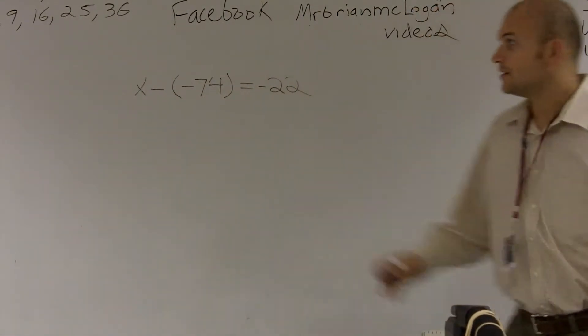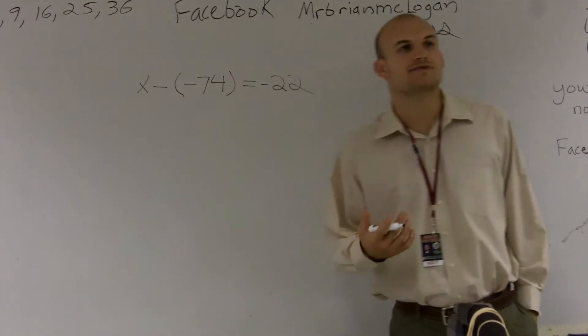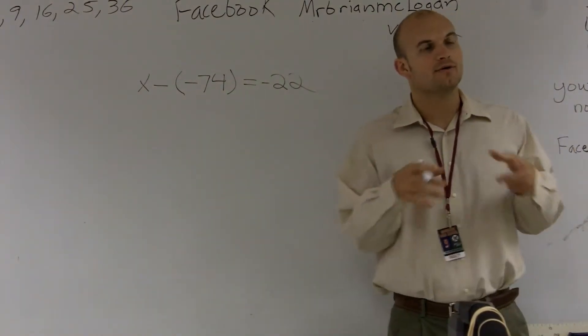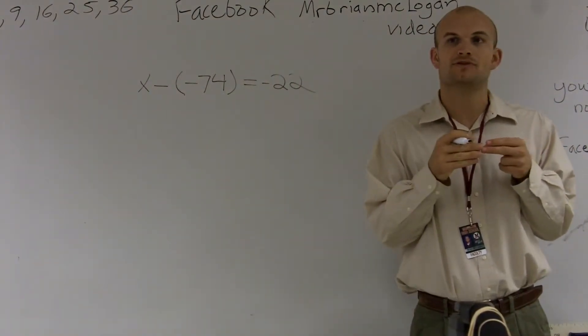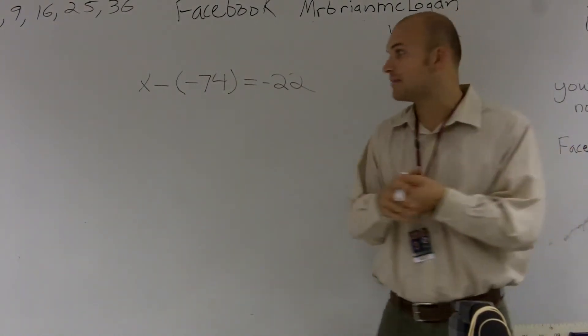On a problem like this, we have x minus a negative 74. One thing I want you guys to remember is whenever we have two negative signs next to each other, they're kind of canceling each other out. And what we can do is we can actually rewrite the problem.